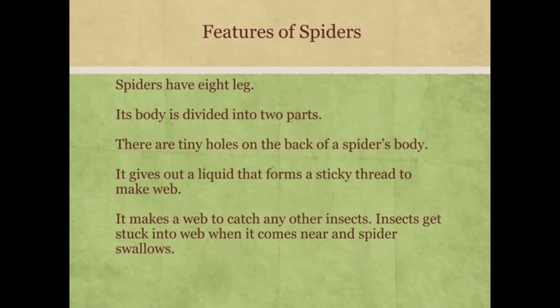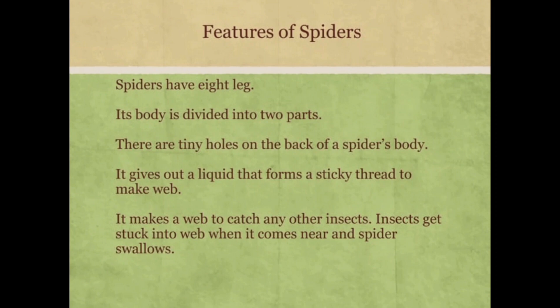Spiders have eight legs and their body is divided into two parts. There are tiny holes on the back of a spider's body that give out a liquid which forms a sticky thread to make a web. It makes a web to catch other insects. Insects get stuck in the web when they come near, and the spider follows.